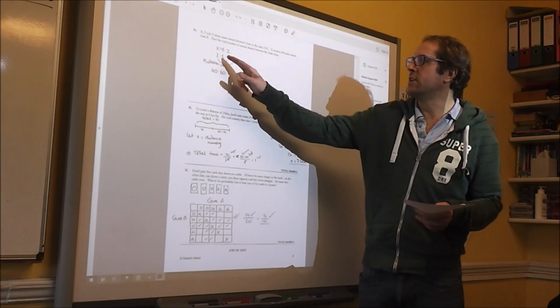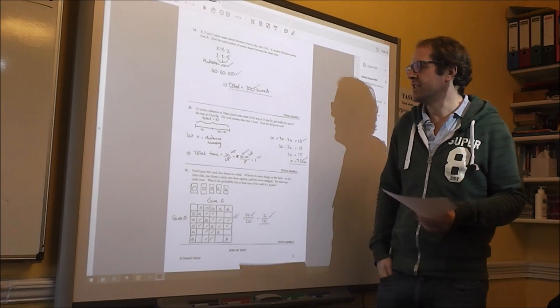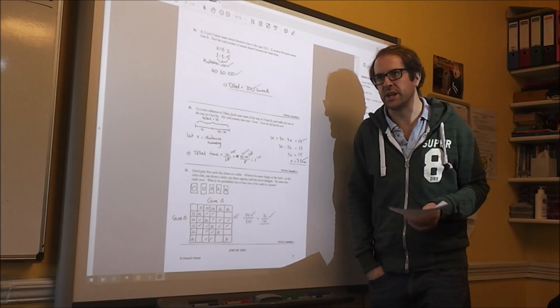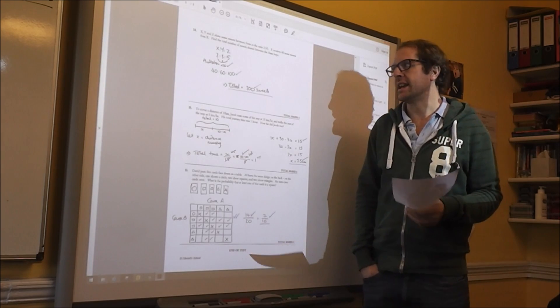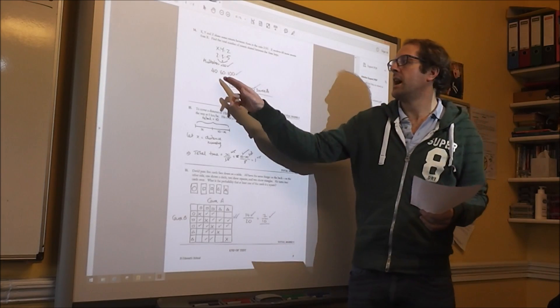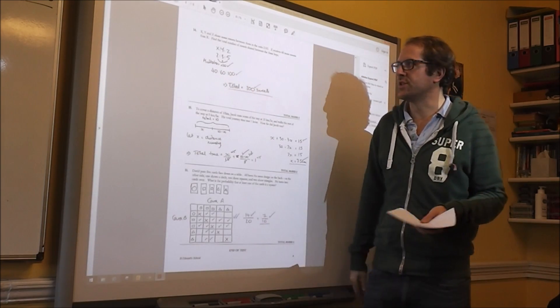Which gives you a total number of sweets of 200. And again, it's well worth checking, 40 to 100 has got a difference of 60.